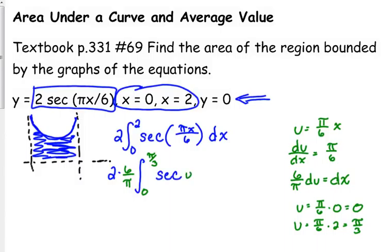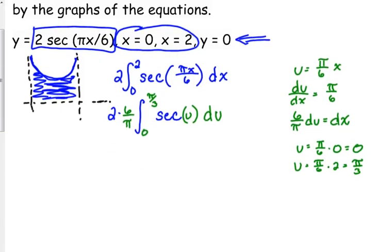Secant of u du. Now, what is the anti-derivative of, well, let's see, we've got 12 over pi. What is the anti-derivative of secant? Thank you very much. It's positive. Yes. Cos are the negative ones. Okay, so at this point, the reason why I changed my limits was so that I don't have to plug the pi over 6x back in there. I'm just going to leave it as u and make my life a little bit easier.